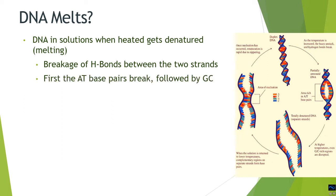When heat is applied, the AT base pairs are the first to break because of the only two hydrogen bonds between adenine and thymine, while there are three bonds between guanine and cytosine, so it takes a little more heat to break those. The first areas which get denatured are the AT-rich regions, as you can see in the diagram on the right-hand side — the region which melts first is rich in AT base pairs, followed by the GC base pairs.